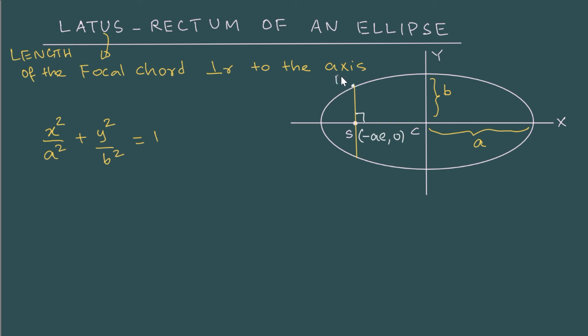So this point, if it is x comma y, we know x is minus ae. And if we can get y, I will get that distance. And then if I take twice of that, I should get the length of the focal chord, which is the latus rectum.